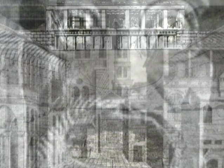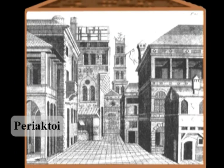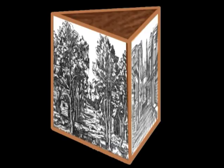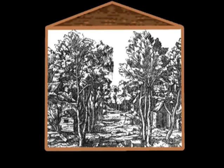Triangular prisms, or periactoi, were already used in the 5th century BC, and made it possible to change the scenery within a play or between plays. It could have looked like this.